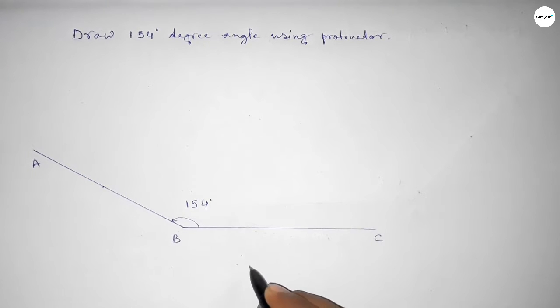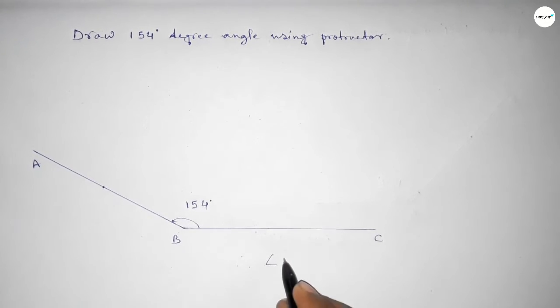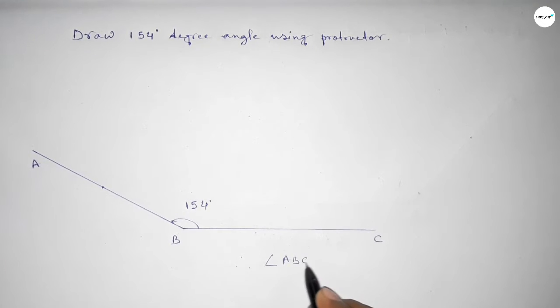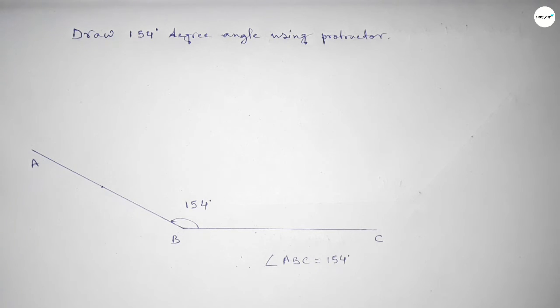Therefore, angle ABC equals 154 degrees. That's all. Thanks for watching. If this video is helpful to you, please share it with your friends.